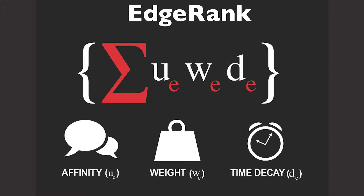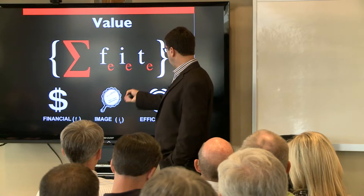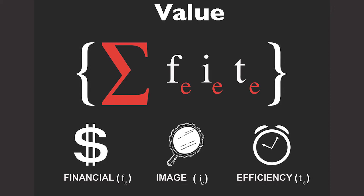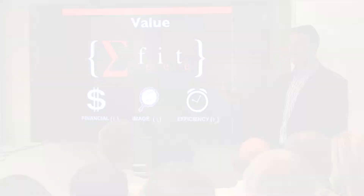Value is defined as a function of financial, image, and efficiency. Financial is dollars and cents. Image is how you relate, or how you are looked at by coworkers, by the business owners, and by your peers, by your friends, by anybody else.